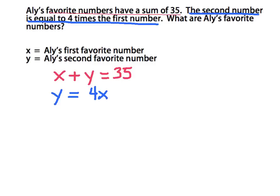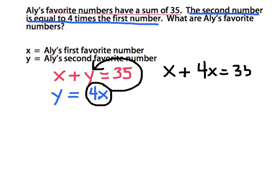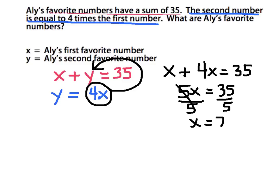Step 3 tells us that now we want to solve the system. Since in my second equation y is already isolated, I can take 4x and substitute it in place of y in my first equation. So I'll have x plus 4x equals 35. Combining like terms, I get 5x equals 35. Now I'm going to solve this simple equation by dividing both sides by 5. I get x equals 7.